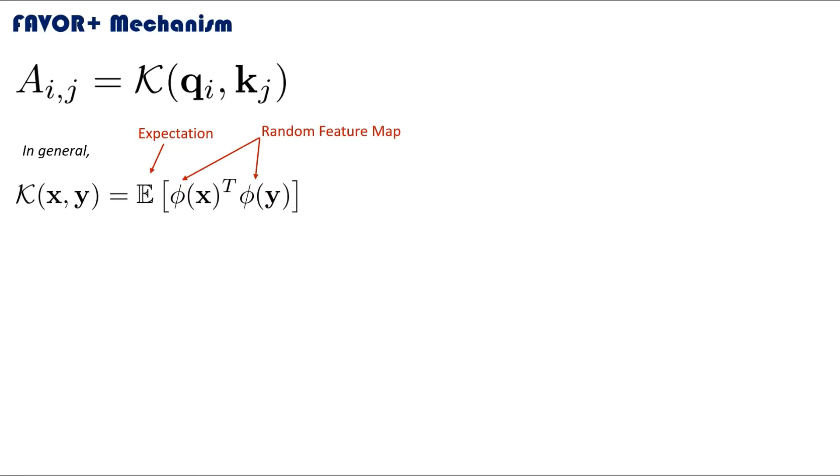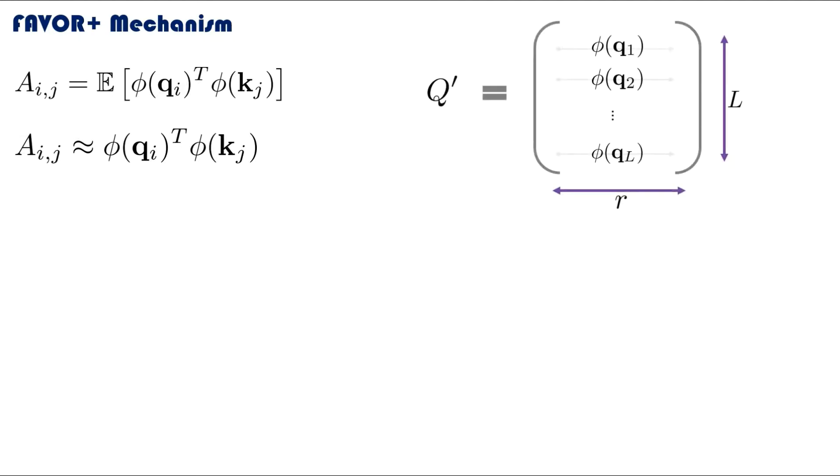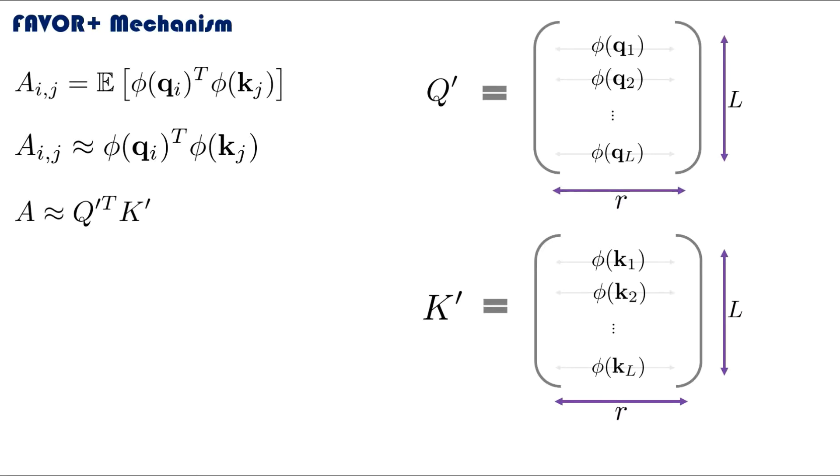The basic idea is that phi is a function that is sampled from a distribution of functions where the distribution satisfies this equation we have here. So when we apply this randomly sampled function on some vector, it can change the dimensionality of the vector. We will say it changes the dimensions from d to r. So now using this relationship, we have a new expression for an element of our attention matrix. One way we can approximate the expectation is by just using one sample of the phi function and just say that is good enough. Hence, if we denote Q dash and K dash as the matrices after having the random feature map applied to each of their rows, we have an approximate formula for the attention matrix: A approximately equals Q dash transposed multiplied by K dash.